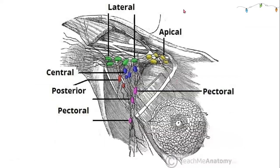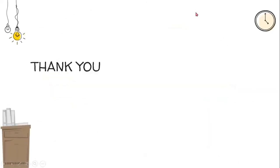Let's see the nodes in the image. The apical node is highlighted in yellow. We can also see the lateral nodes, central nodes, and posterior nodes. The pectoral nodes are highlighted in purple. Thank you.